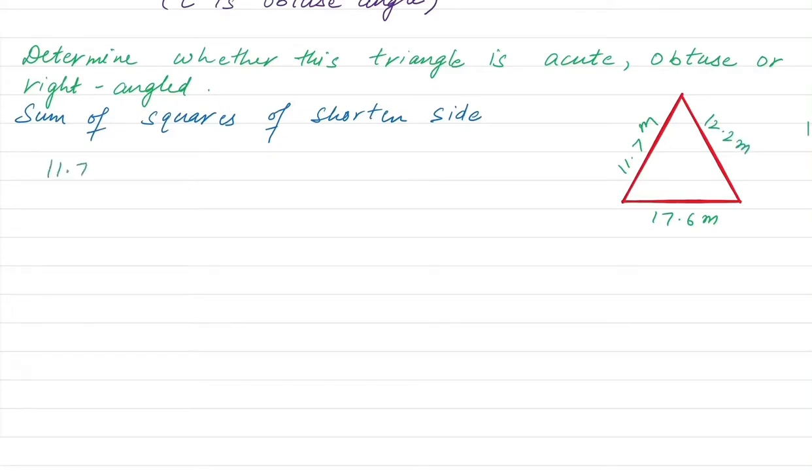Now the shortest sides are 11.7. We need to square it plus 12.2 squared. This equals 136.89 plus 148.84. 11.7 times 11.7 gives 136.89, and 12.2 squared gives 148.84. After adding, we get 285.73.